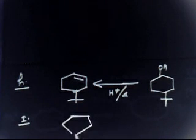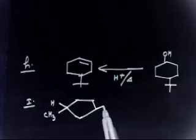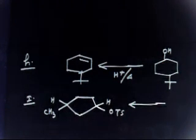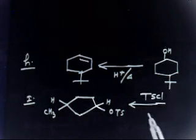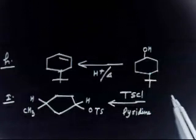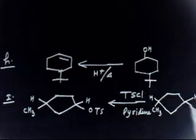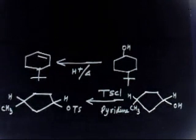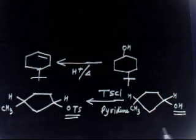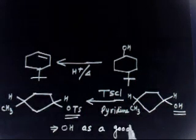For part I, you have to prepare a compound with OTs (tosylate). Take the alcohol and treat it with TsCl in the presence of pyridine. This reaction converts OH into a good leaving group — OTs is a good leaving group whereas OH is not. So TsCl in pyridine is used to convert OH into a good leaving group.